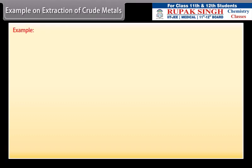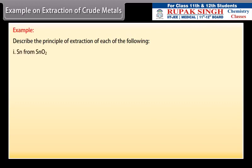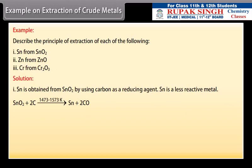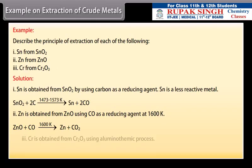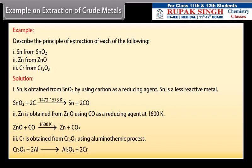Example on extraction of crude metals. Let's take an example on extraction of crude metals. Describe the principle of extraction of each of the following: Sn from SnO2, Zn from ZnO, Cr from Cr2O3. Let's see the solution. Sn is obtained from SnO2 by using carbon as a reducing agent. Sn is a less reactive metal. Zn is obtained from ZnO using CO as a reducing agent at 1600 Kelvin. Cr is obtained from Cr2O3 using aluminothemic process.